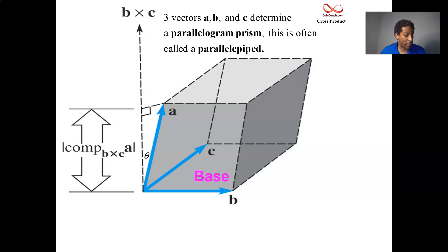The base for us is a parallelogram. In the previous video, one of the geometric properties of the cross product we found was that the magnitude of the cross product between two vectors is equal to the area of the parallelogram determined by those two vectors. So the magnitude of b cross c is going to be equal to the area of our base.